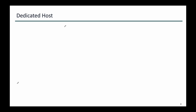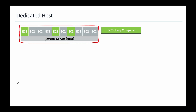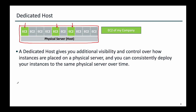Now let us understand what a dedicated host is. Again, instead of going to the definition, let us start with the diagram. This is a physical server. Unlike a dedicated instance, here you book the entire physical server and you pay for the entire physical server. In case of dedicated instance, you only pay for whichever EC2s you have launched — you are not paying for the entire server. But here you are paying for the entire server. A dedicated host gives you additional visibility and control over how instances are placed on a physical server. Basically, it gives you access to things like the sockets and the cores which are part of the physical server layer, and you can use them to decide where to launch your EC2.